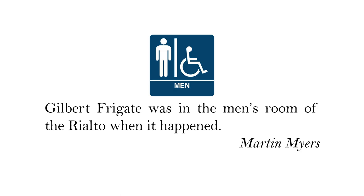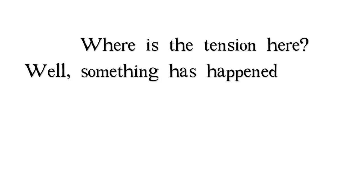Martin Myers writes: Gilbert Frigate was in the men's room of the Rialto when it happened. Where's the tension here? Well, something has happened and we don't know what. We want to find out, so we keep reading.